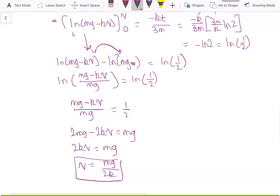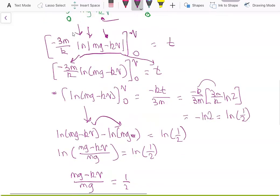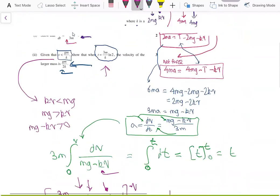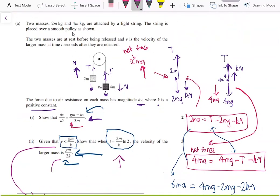And this is going to be the velocity of both of the masses at the time t. And this is, yeah, this is what we wanted to prove, so we've successfully proven the velocity of the larger mass is gm over 2k.